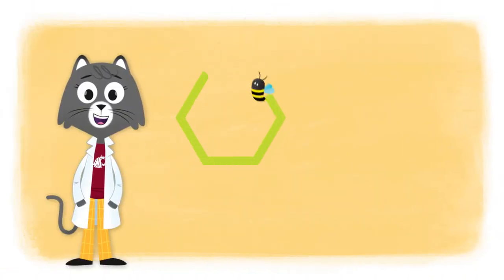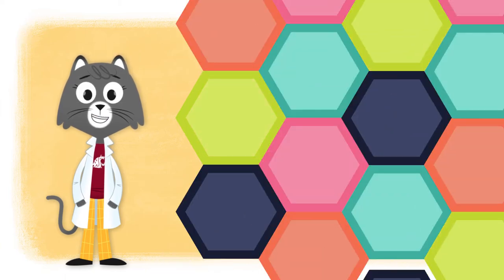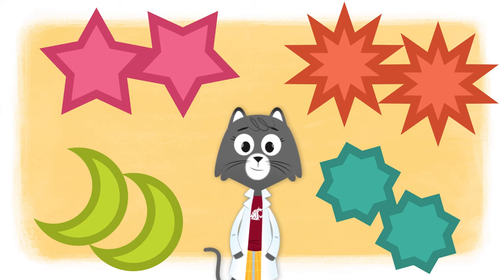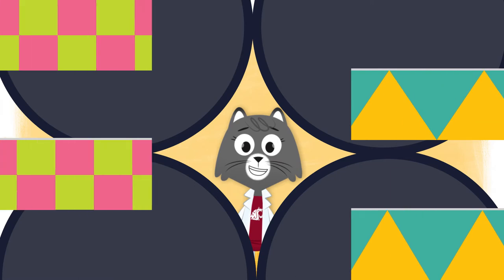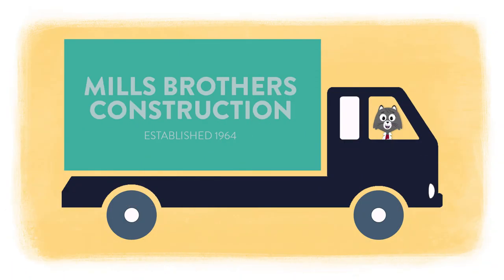When bees make hexagons in their hives, the six-sided shapes fit together perfectly. If you think about it, other shapes wouldn't work quite as well. Circles would leave gaps in the honeycomb, squares and triangles wouldn't leave gaps, but the hexagon works even better.